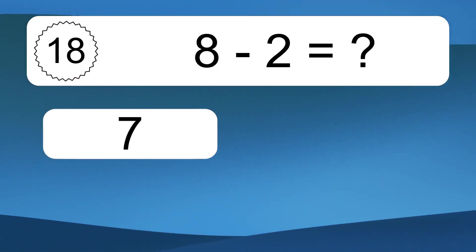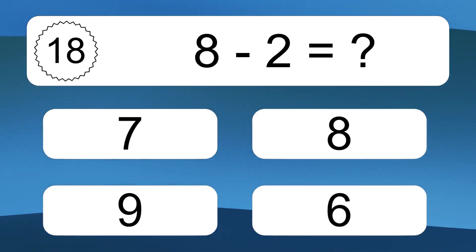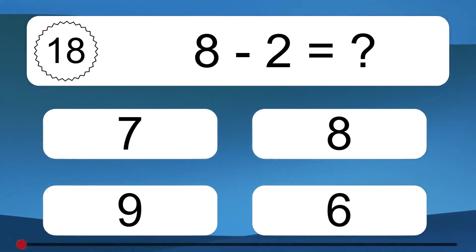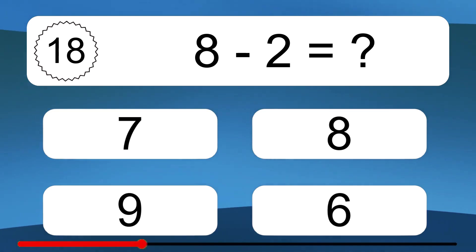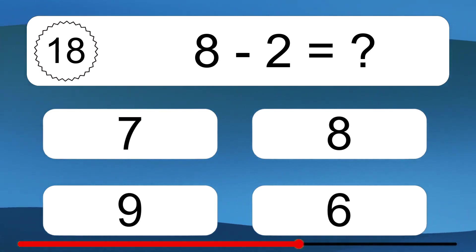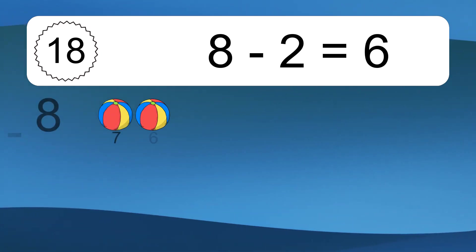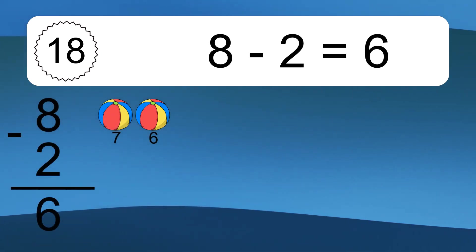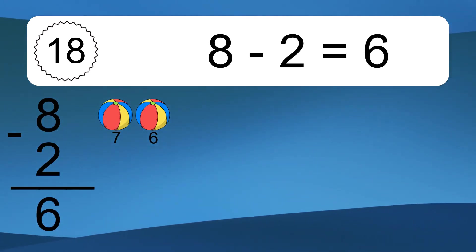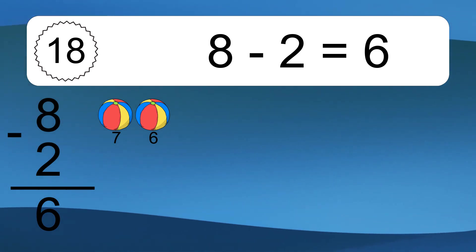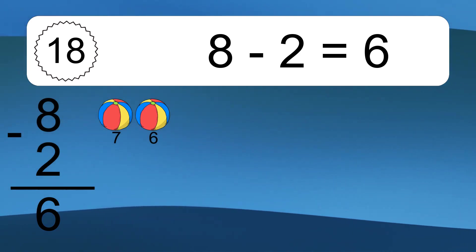8 minus 2 equals what? 8 minus 2 equals 6. Let's count it: 7, 6.